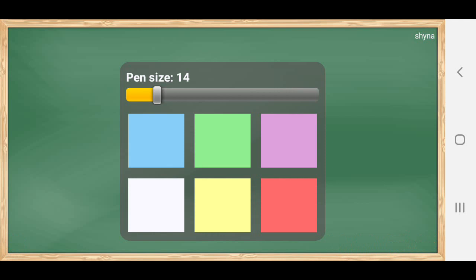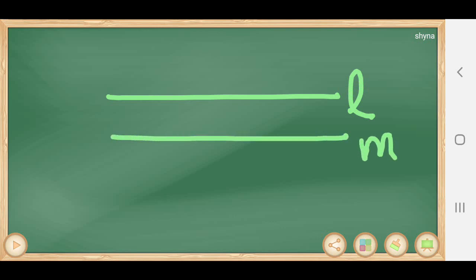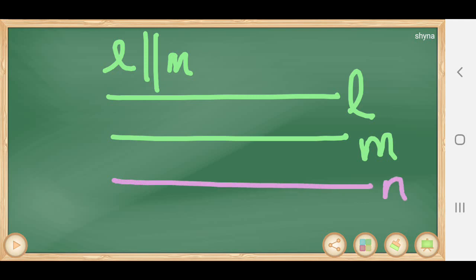We all know about parallel lines. Consider line L and another line M. L and M are parallel — we write this as L parallel to M. If L is parallel to M, the distance between these two lines is equal everywhere.